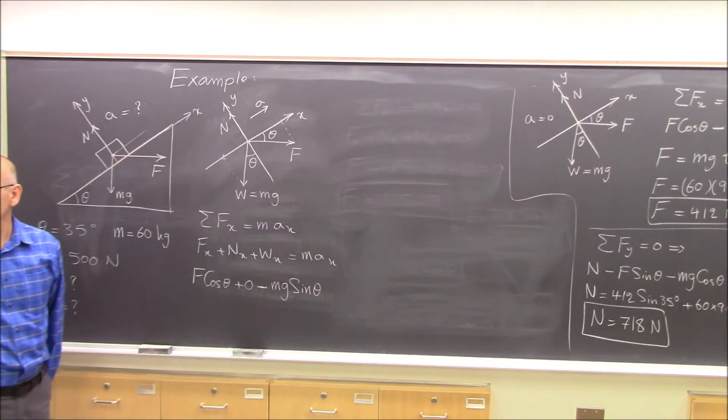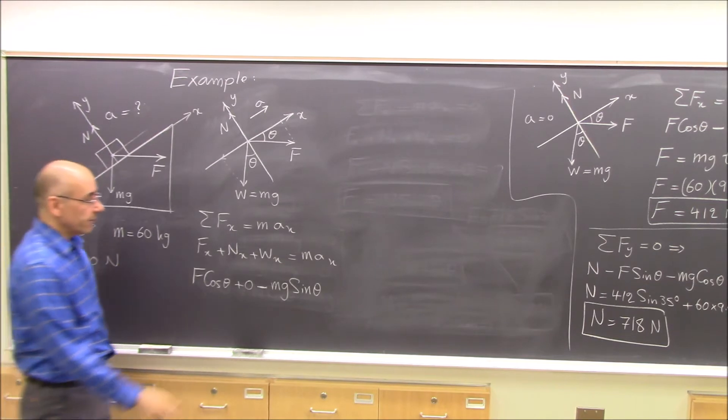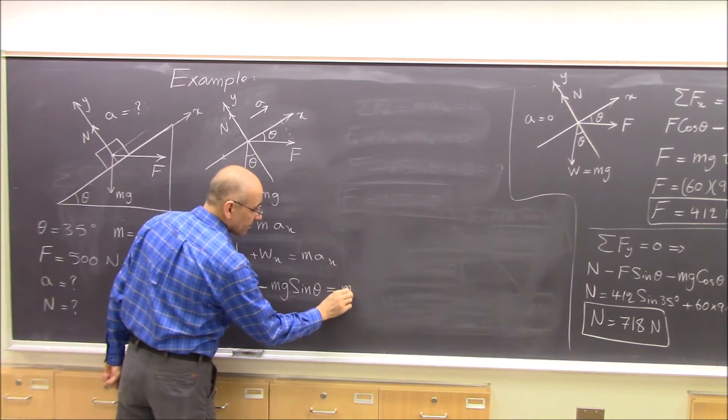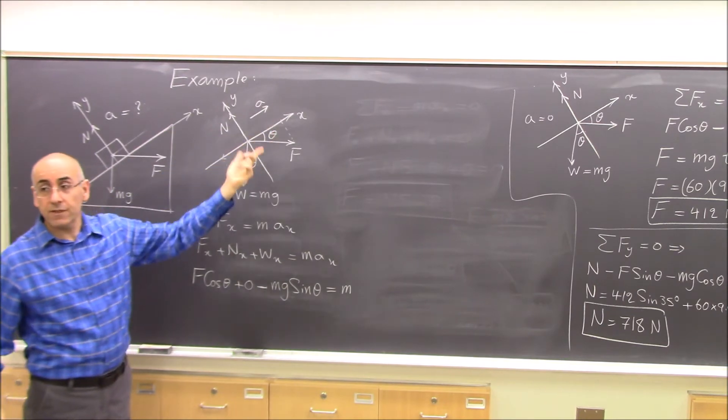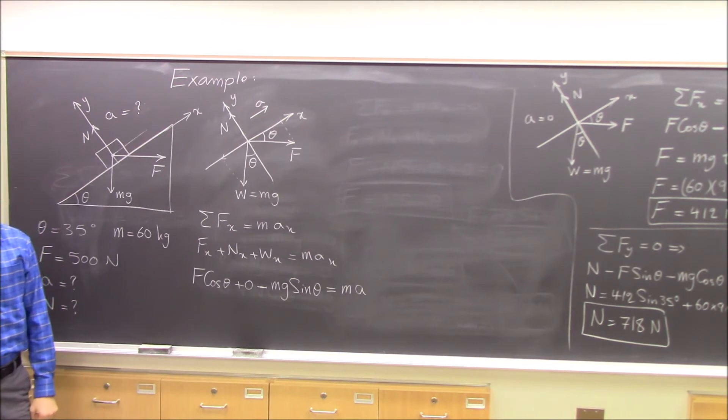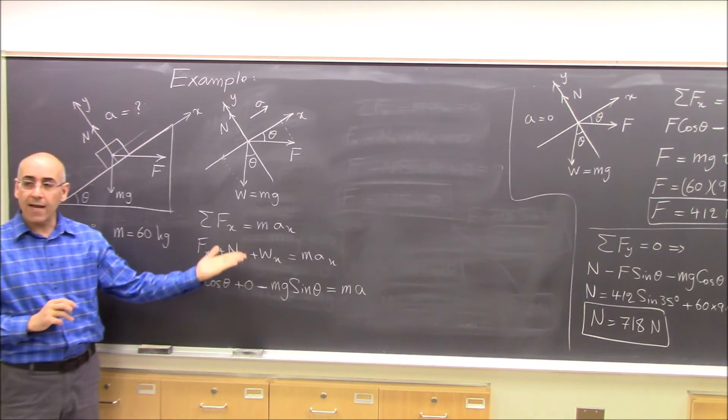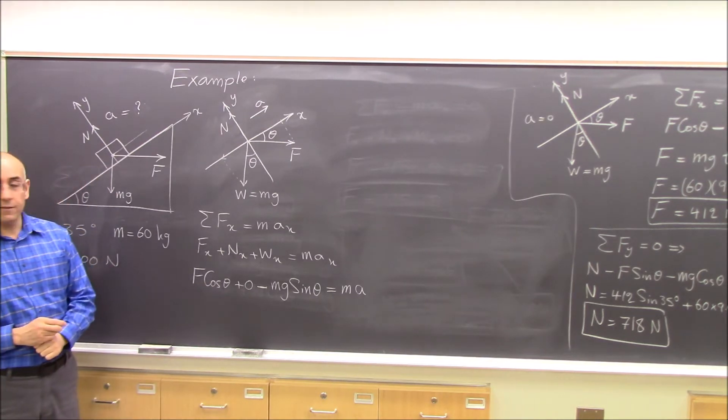Is that clear? This is the sum of all the x components, equal to mass times the x component of acceleration. Because acceleration is in the x-direction, it becomes the magnitude of acceleration. I'm just following the language, following what Newton's law tells me.